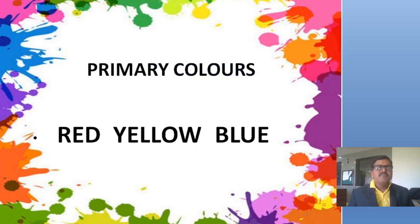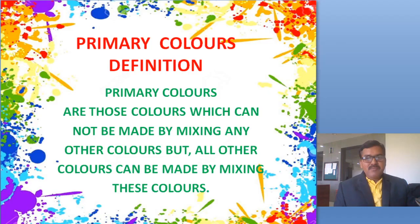Which are the primary colors? Primary colors are red, yellow, and blue. Why are red, blue, and yellow called primary colors? Primary colors are those colors which cannot be made by mixing any other colors, but all other colors can be made by mixing these colors.